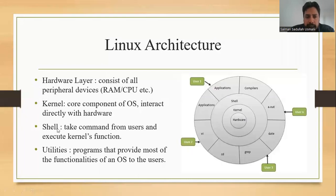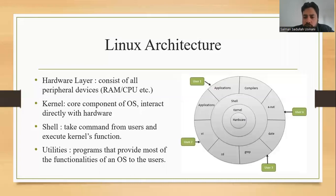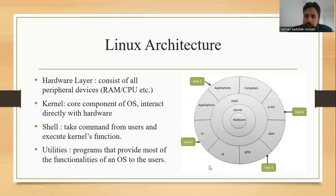The Linux architecture has hardware at the base — RAM, CPU, motherboard, etc. — then the kernel, which is the core component of the operating system. The shell takes commands from users and executes kernel functions. Above that are utilities, where single or multiple users log in and execute applications — browsing the internet, watching movies, and so on. All these utilities execute through the shell, kernel, and hardware.